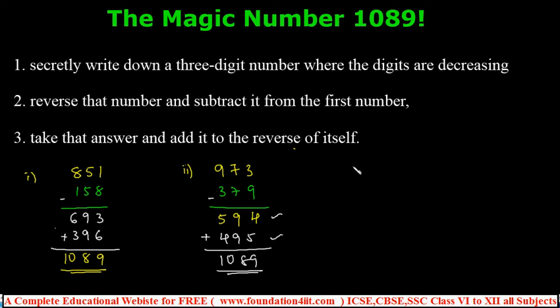You can take any number and magically show them the answer: 1089. This is one trick. Using this same number 1089, I want to show you one more concept: the missing digit trick.